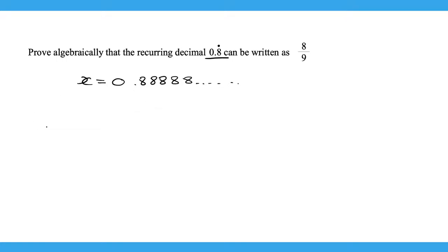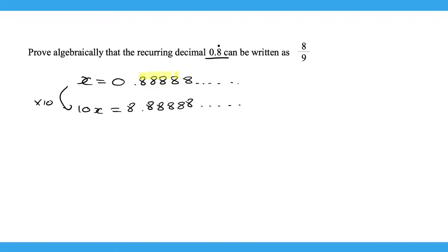Now let's multiply this whole thing by 10. So 10x is going to be equal to 8.88888 and so on. Now as you can see, the numbers after the decimal point are now the same. We have 0.888 in both cases, so we can just subtract these two numbers from each other.